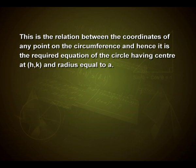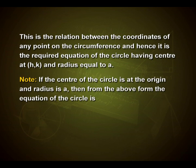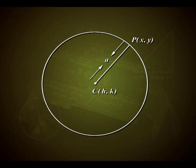This is the relation between the coordinates of any point on the circumference and hence it is the required equation of the circle having center at (h, k) and radius equal to a. Note that if the center of the circle is at the origin and radius is a, then the equation of the circle is x² + y² = a². We can see in the figure the center C with coordinates (h, k), radius a, and P is a point with coordinates x and y.